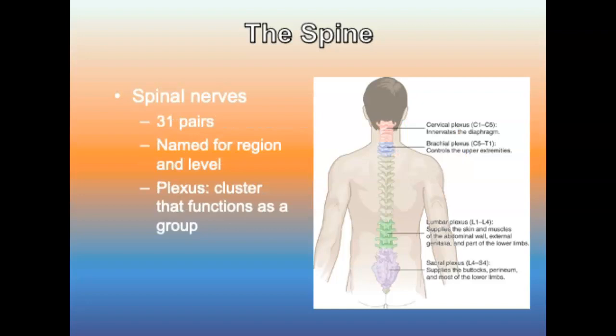Spinal nerve groups are named based on their source of origin and point of termination, and they converge into plexuses that enable several spinal cord nerves to control one area of the body. The cervical plexus is C1 through C5. The phrenic nerves, C3 through C5, supply the diaphragm. The brachial plexus, C5 through T1, joins nerves controlling the upper extremities. The lumbar plexus, L1 through L4, supplies the abdominal wall, external genitalia, and part of the lower limbs. The sacral plexus, L4 through S4, gives rise to the sciatic nerves and supplies the buttocks, perineum, and most of the lower limbs.